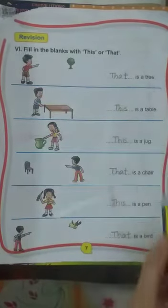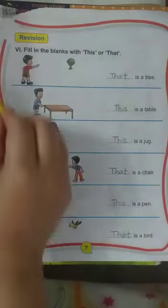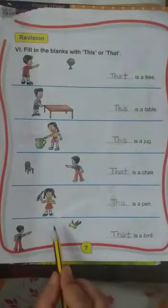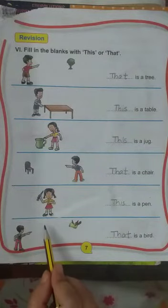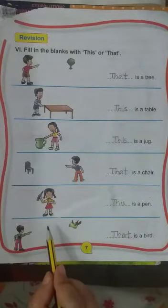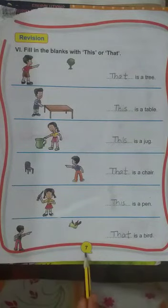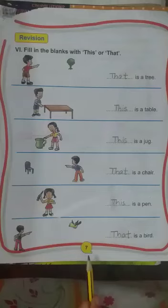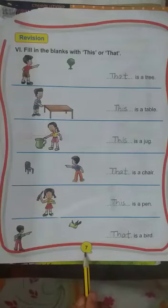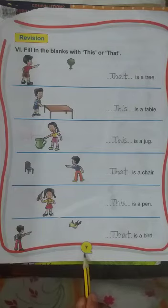So this is the way — these are the uses of 'this' and 'that'. With the help of this I have completed page number 7 of your English practice book. So you do it in your book or in your copy also. Good luck, goodbye.